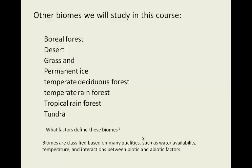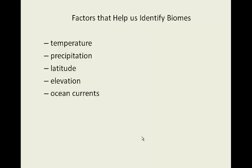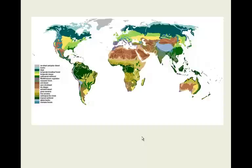Biomes are classified based on many qualities, such as water availability, temperature, and interactions between biotic and abiotic factors. Factors that help us identify biomes include the temperature, the amount of precipitation, the latitude, the elevation, and ocean currents.